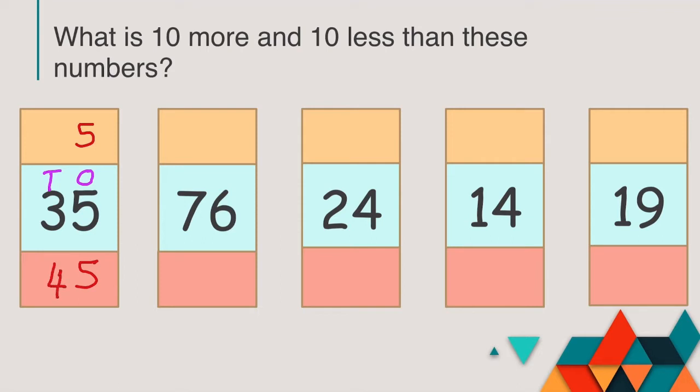And 10 less than 35, take away 1 from the tens digit. So 3 minus 1 is 2. 10 more than 35 is 45 and 10 less than 35 is 25.